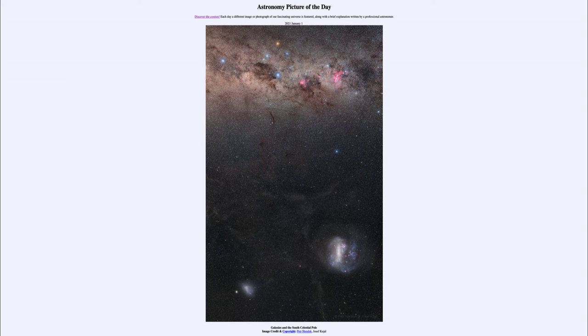Today's picture for January 1st, 2021 is titled Galaxies and the South Celestial Pole. So what do we see here? We see a number of objects prominently seen in the southern sky.